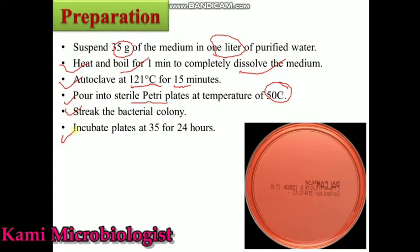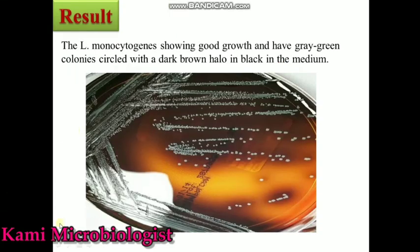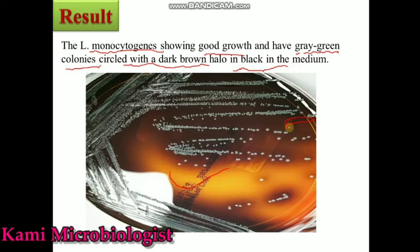After that, we will incubate the plates at 37 degrees Celsius for 24 hours. These are the bacterial colonies as you can see using this media. Listeria monocytogenes shows good growth on this media and mostly has gray-green colonies with circular dark brown hollows in a black medium. These are the dark hollows as you can see, and mostly gray-green colonies when observed live. This is all about the PALCAM Listeria Agar.